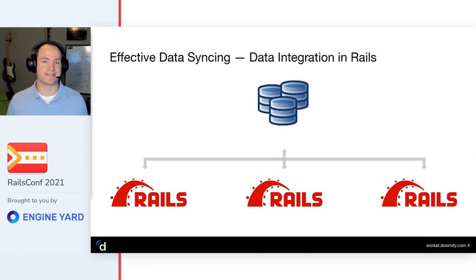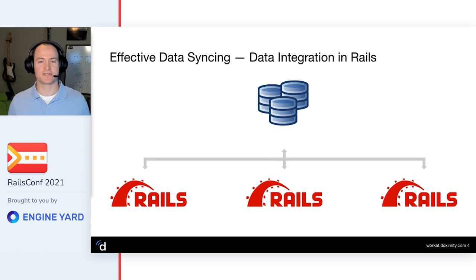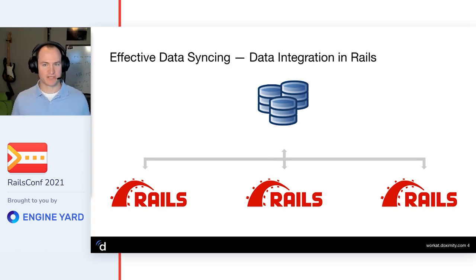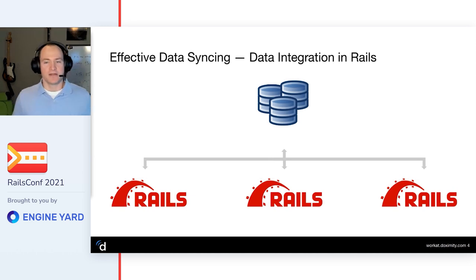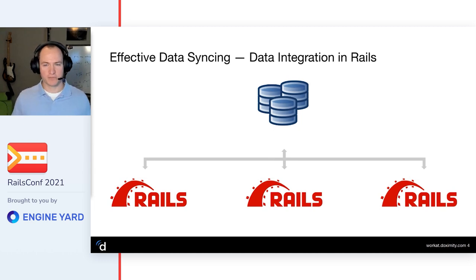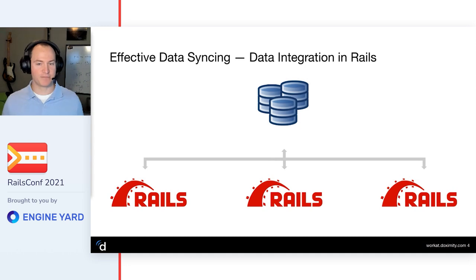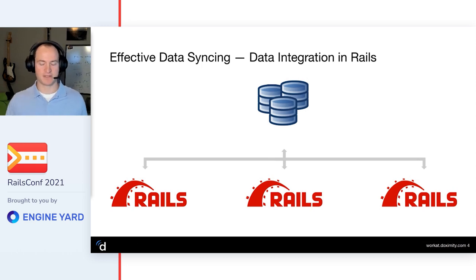Now that we know the background, let's define effective data syncing. What I'm talking about is data integration in Rails - you have many Rails-based microservices and many different data stores. How do we move data to and from those different data sources while respecting application business logic without breaking things? Before we go into application growth, a preview of the solution: it is a Kafka-based system that allows our data team to produce messages and our application developers to consume those messages, working independently.